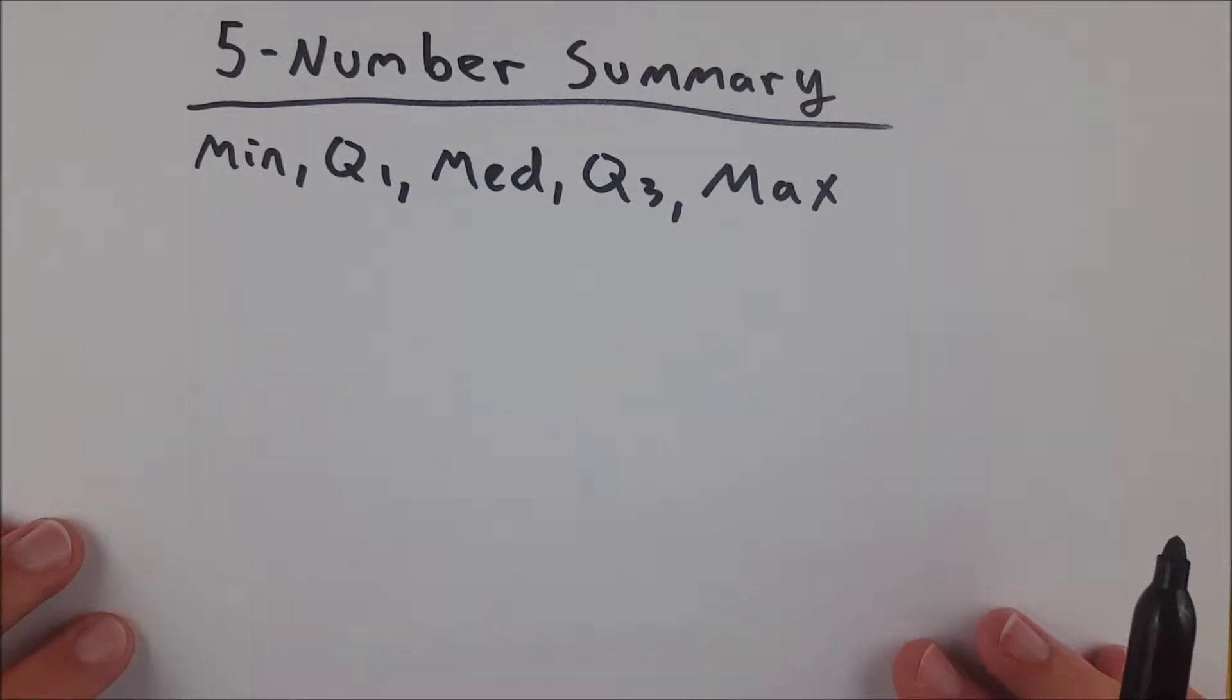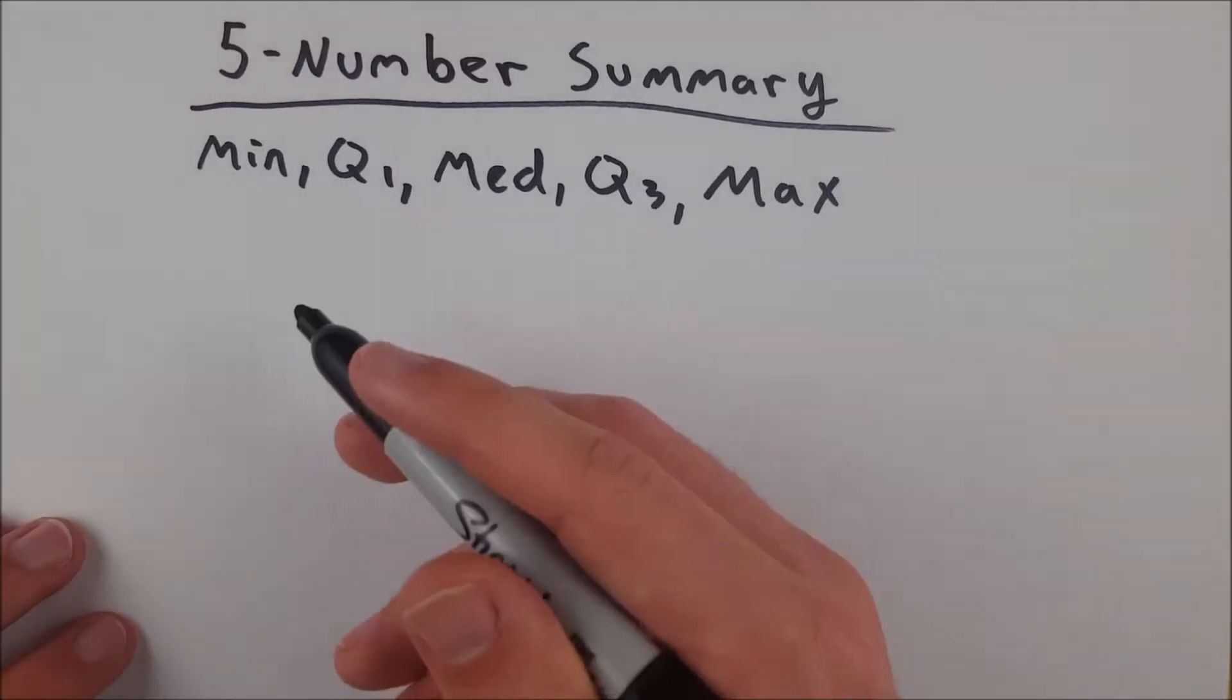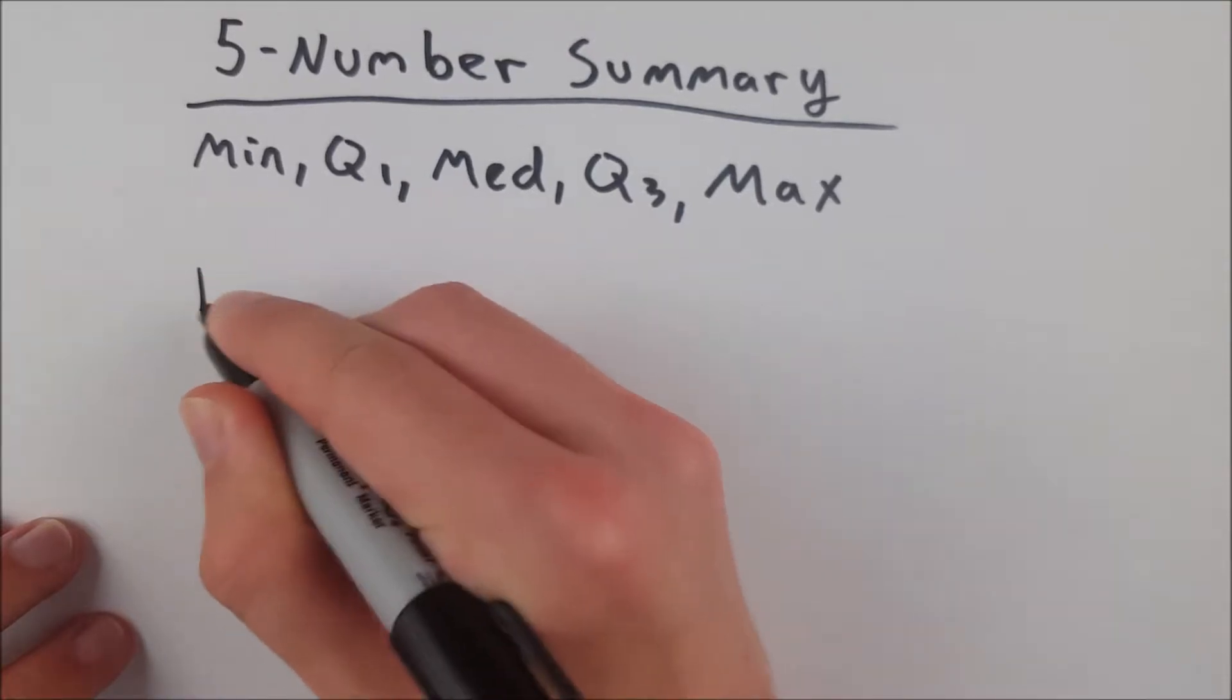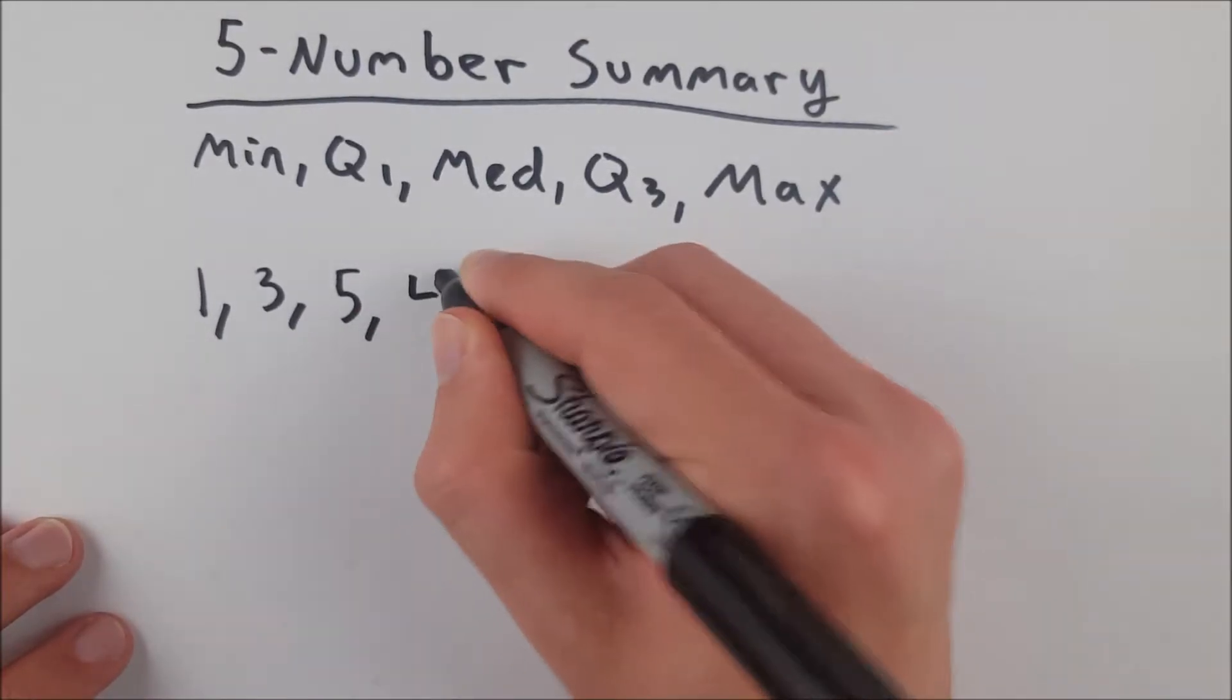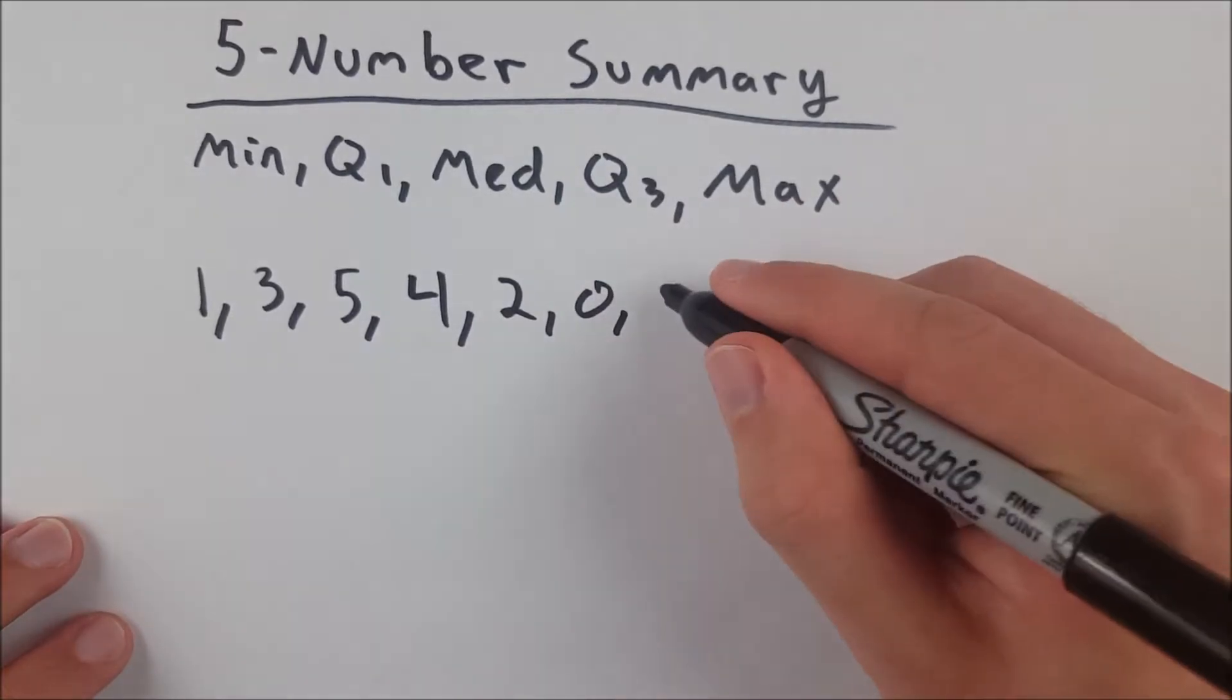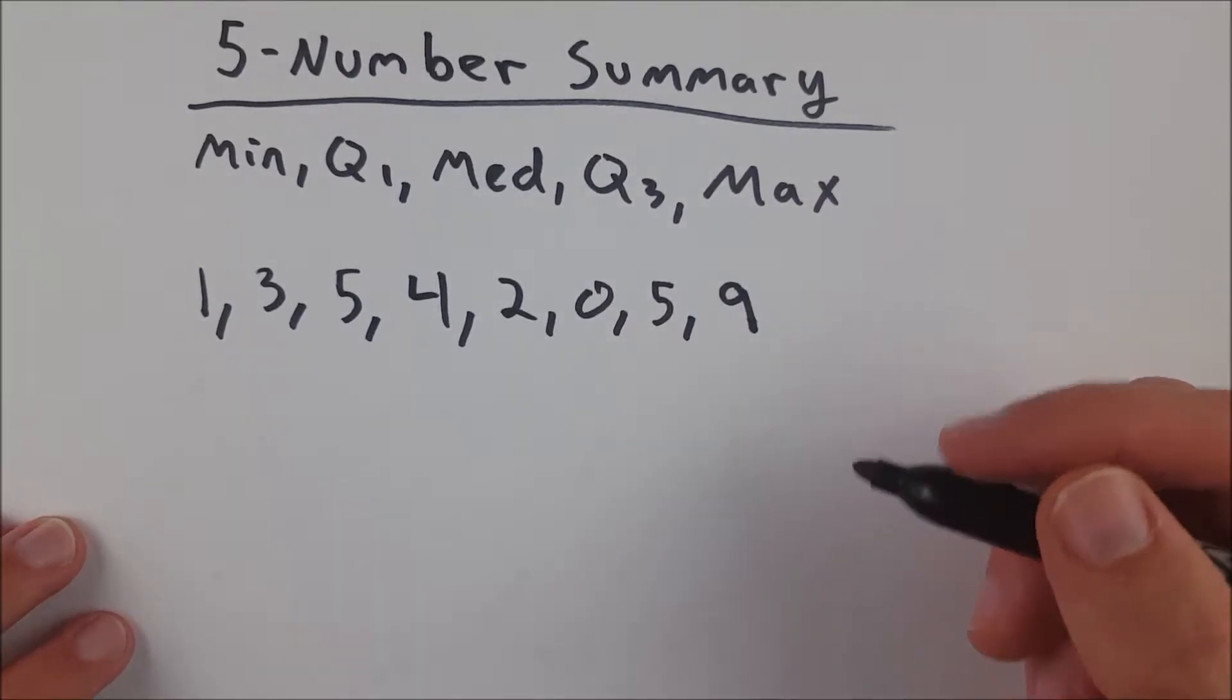So let's say we have some data from an alligator wrestling contest to see how many alligators each contestant could successfully wrestle in a span of 10 hours. And let's say these are the numbers we've got for this contest. Somebody successfully wrestled one alligator. One guy managed to wrestle three. Someone had five, four, let's say a two, zero. Let's take a five, and we'll have a nine. Someone wrestled nine alligators. That's almost one per hour.